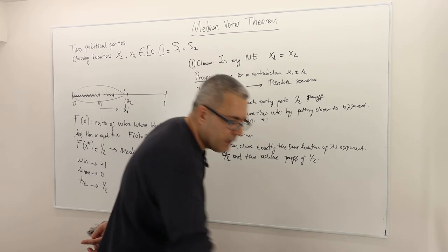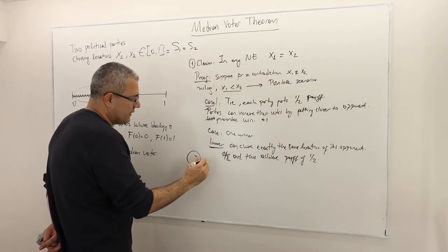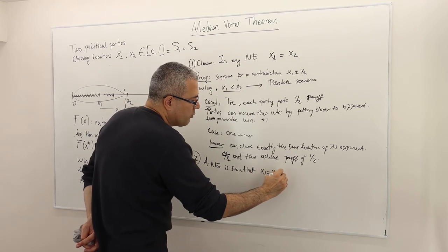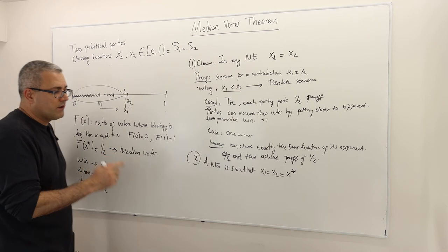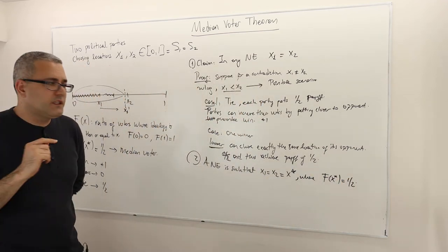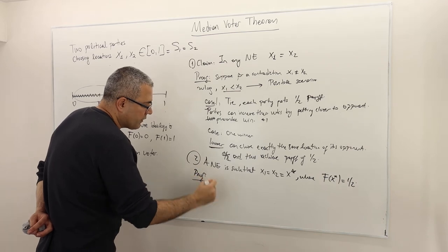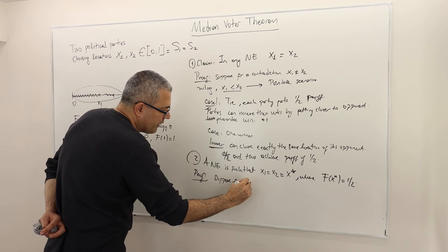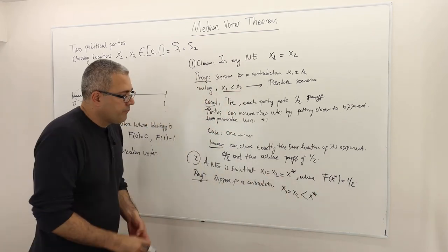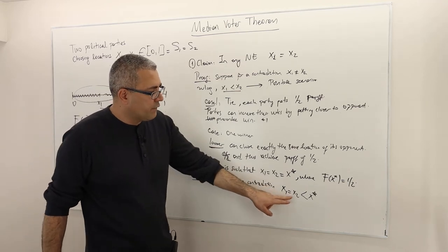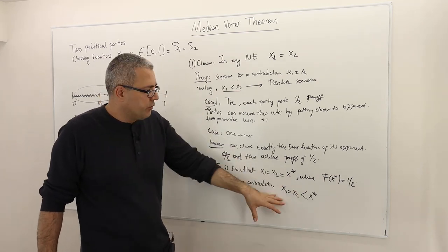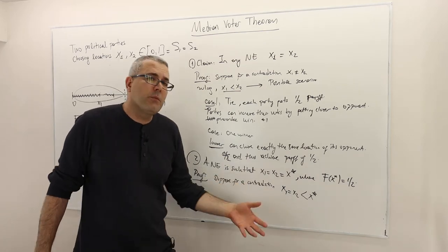Second claim: a Nash equilibrium is such that x1 equals x2 equals x star, where x star is the point where f of x star equals one half — the median voter. I already showed that in any Nash equilibrium x1 must equal x2. Now suppose for a contradiction that x1 equals x2, which is less than x star. Let me redraw: x star divides the distribution so that 50% of voters are on each side, and x1 equals x2 sits to the left of x star.